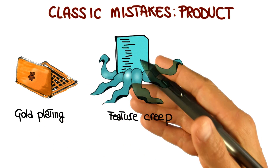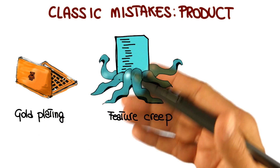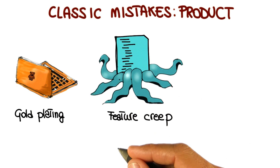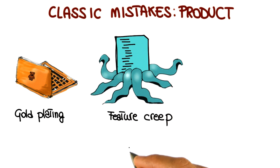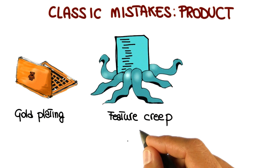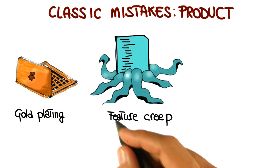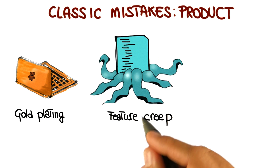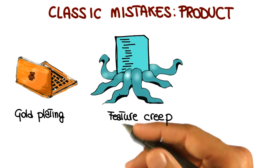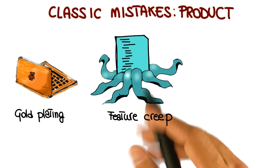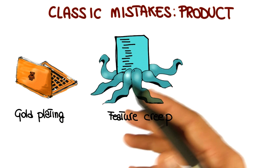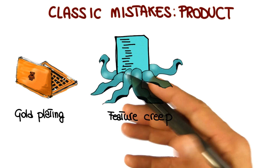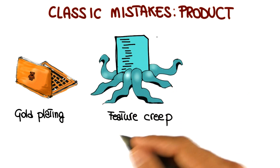Feature creep is another common mistake, and consists in adding more and more features to a product that were not initially planned and are not really needed in most cases. There is evidence that the average project experiences about a 25% growth in the number of features over its lifetime, which can clearly highly affect the project schedule.